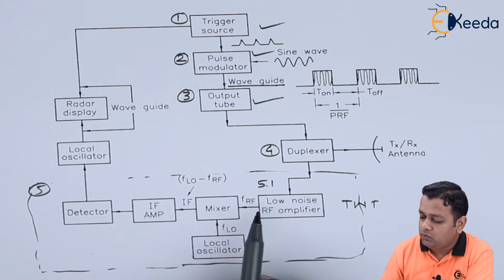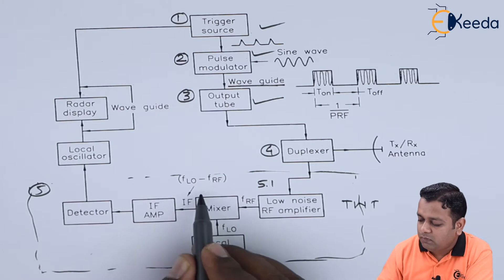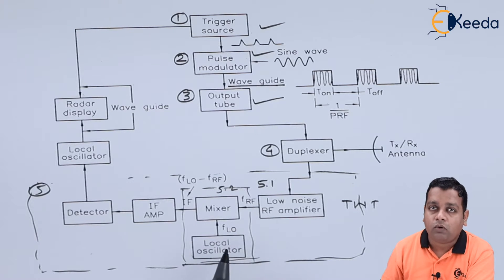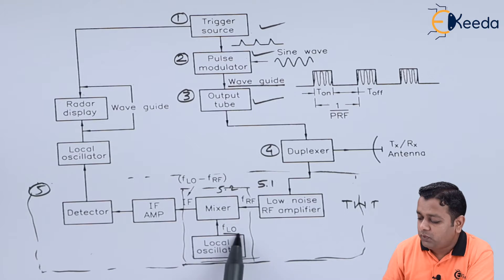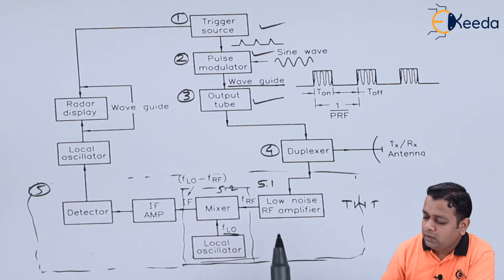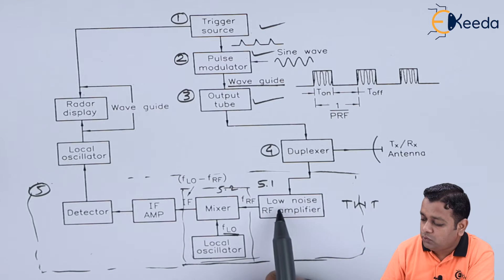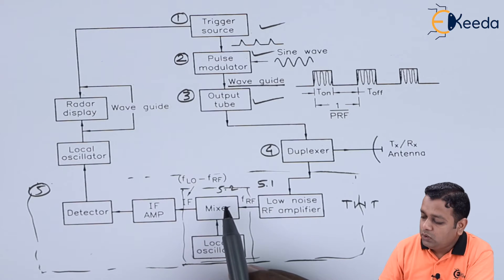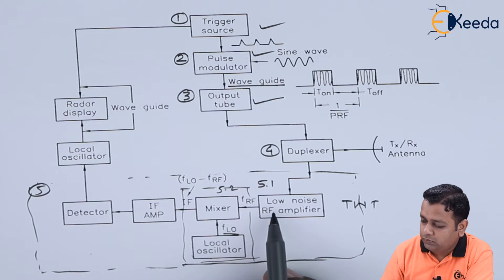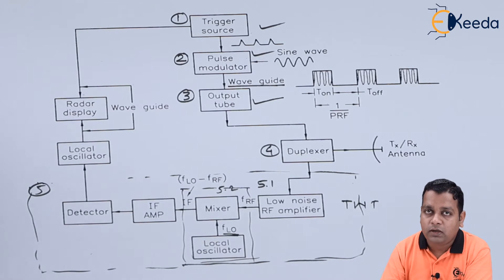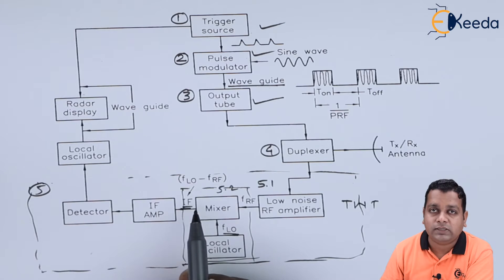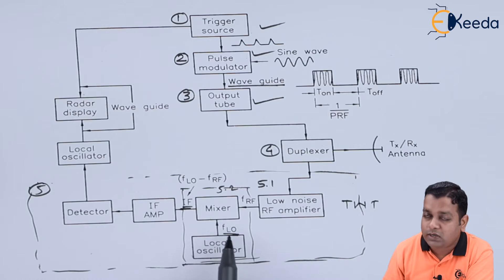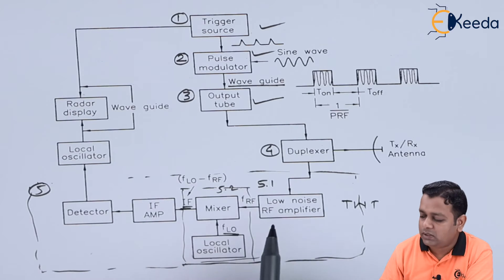The RF signal F_RF is fed as input to block 5.2 — the mixer and local oscillator. From the local oscillator, a signal of known frequency F_LO is fed as input to the mixer, along with F_RF coming from the low noise RF amplifier. The work of the mixer is to convert the RF signal to a comparatively lower, controlled value denoted as IF — the intermediate frequency. IF is equal to F_LO minus F_RF, that is the difference of the local oscillator frequency minus the RF frequency from the low noise RF amplifier.